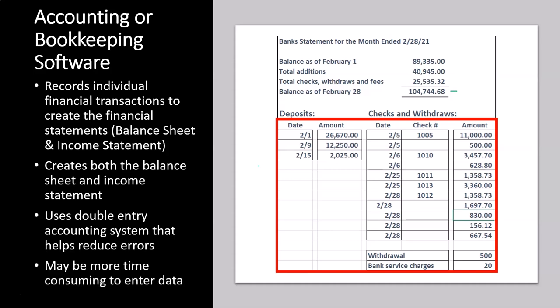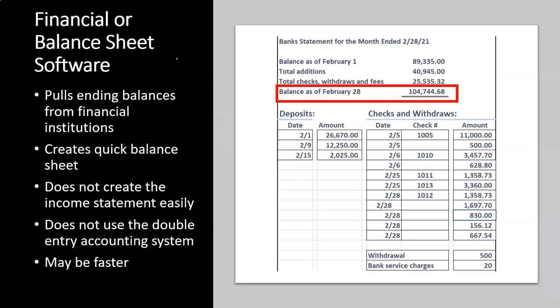Data entry may be more time-consuming initially. When you first set up accounts in something like QuickBooks, you need to set up your chart of accounts, assign transactions to accounts, and ensure beginning balances are properly entered. Once that initial setup is done, it's straightforward going forward and you can use bank feeds. You'll also need to reconcile any differences between cash and accrual basis to keep things in balance — for example, when you buy a home, you'll deviate from a pure cash basis. This differs from financial software, which connects to the bank but doesn't capture that transaction-level detail.